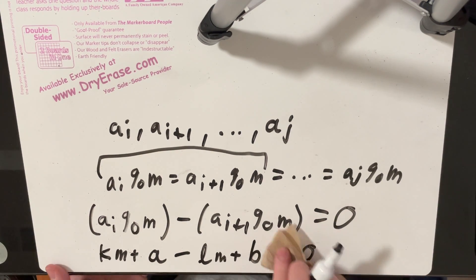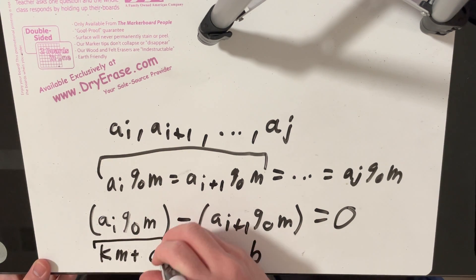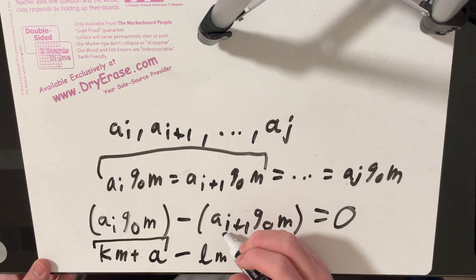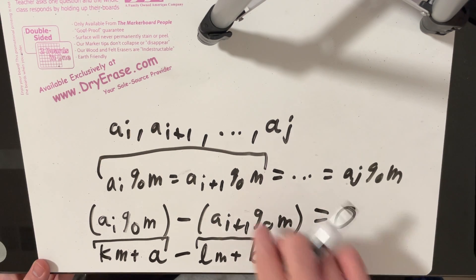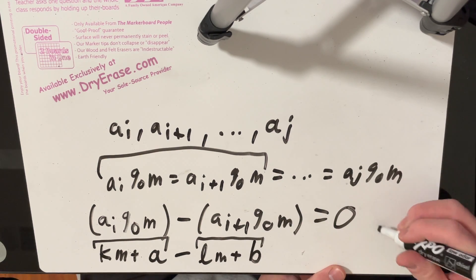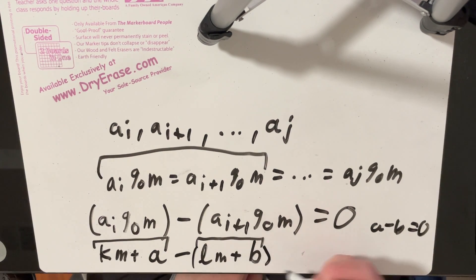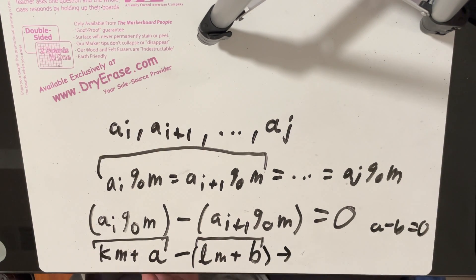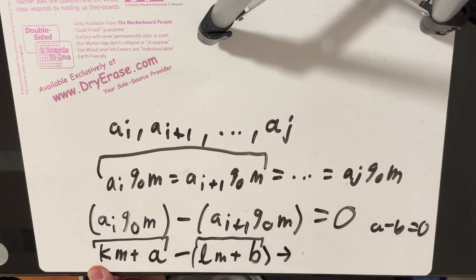And then it's minus some other integer where it's like l times m plus b. We can represent this a_i like this and a_{i+1} can be represented like this, and a is going to be equal to a_i mod m and b is going to be equal to a_{i+1} mod m. And we know that since this quantity is equal to zero, we know that this implies that a minus b has to equal to zero.